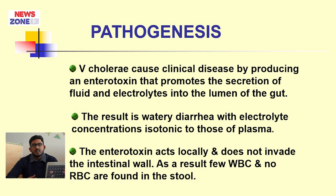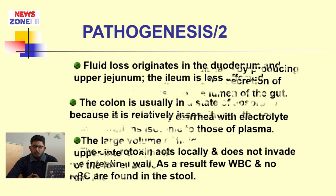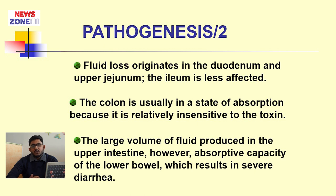Pathogenesis: Vibrio cholerae causes clinical disease by producing an enterotoxin that promotes the secretion of fluid and electrolytes into the lumen of the gut. The result is watery diarrhea with electrolyte concentration isotonic to those of plasma. The enterotoxin acts locally and does not invade the intestinal wall. As a result, few WBCs and no RBCs are found in the stool. Fluid losses originate in the duodenum and upper intestine; the ileum is less affected. The colon is usually in a state of absorption because it is relatively insensitive to the enterotoxin. The large volume of fluid produced in the upper intestine overwhelms the absorptive capacity of the lower bowel, resulting in severe diarrhea.